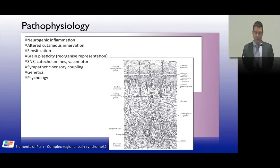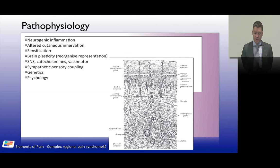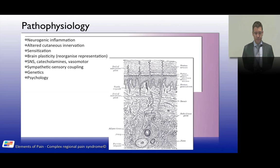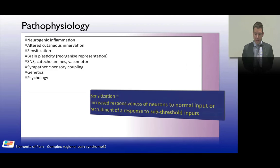Changes in cutaneous innervation are also relevant. Punch biopsies have shown altered small fiber density in CRPS patients, and this may be associated with the pathogenesis of the condition.